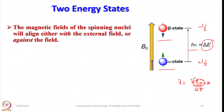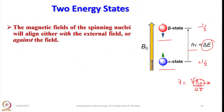The magnetic field of the spinning nucleus will align either with the external field or against the field. Those nuclei aligned with the applied magnetic field will be lower in energy, and those opposing the applied magnetic field will be higher in energy, represented with a downward arrow. A photon with the right amount of energy can be absorbed and cause the spinning proton to flip. When we apply the right amount of energy matching this gap, flipping of the proton or nucleus takes place.